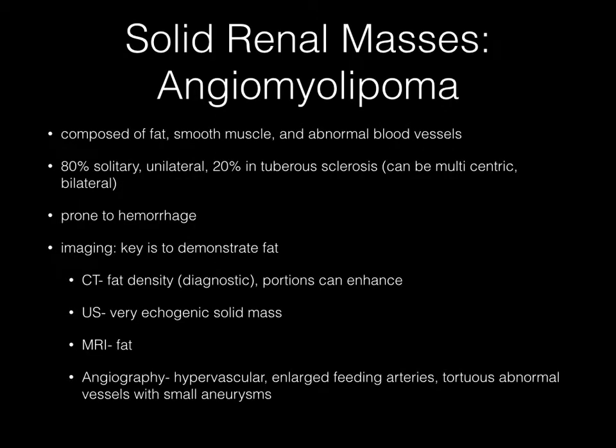Next is angiomyolipoma, composed of fat, smooth muscle, and abnormal blood vessels. 80% are solitary and unilateral, whereas the remaining 20% are seen in tuberous sclerosis and can be multicentric and bilateral. These tend to be prone to hemorrhage. The key on imaging is to demonstrate fat in the lesion. On CT, fat density is diagnostic, although portions of the mass can enhance.